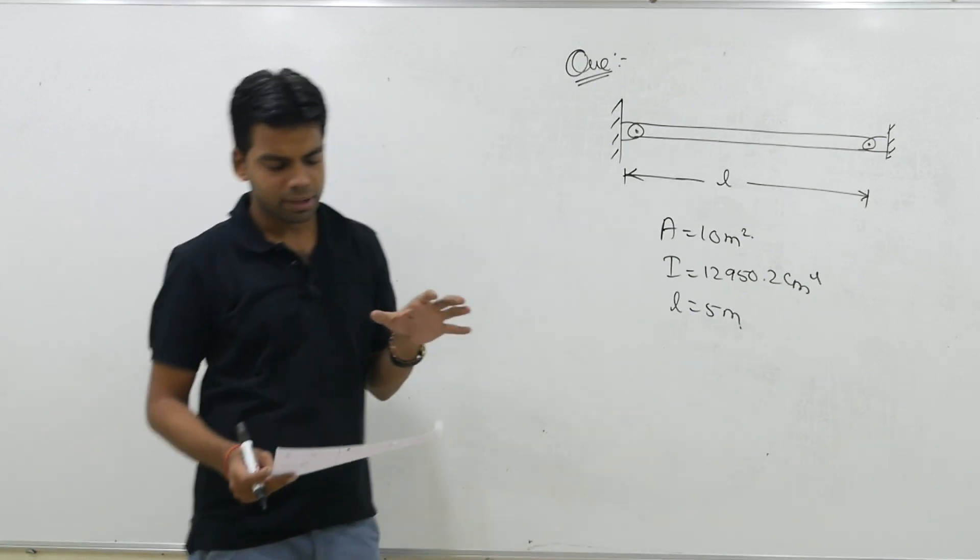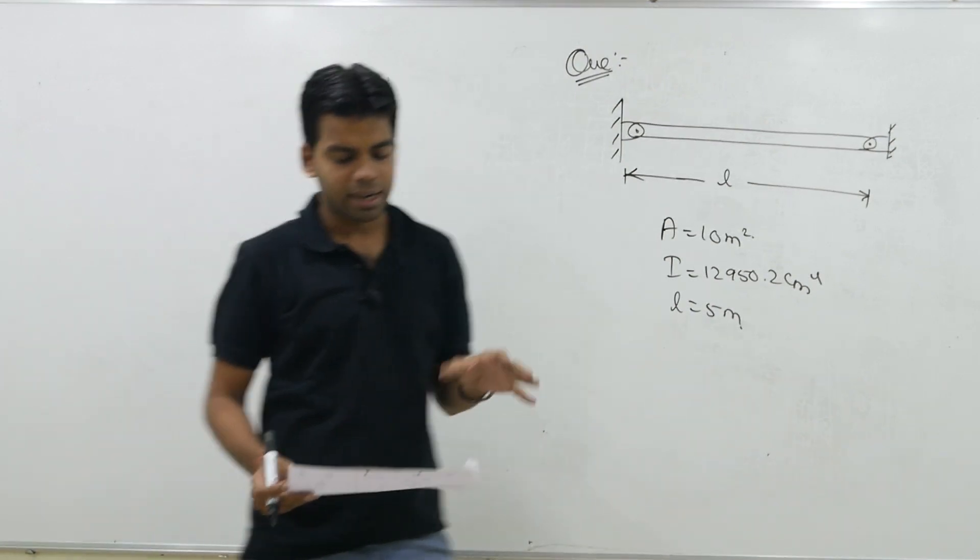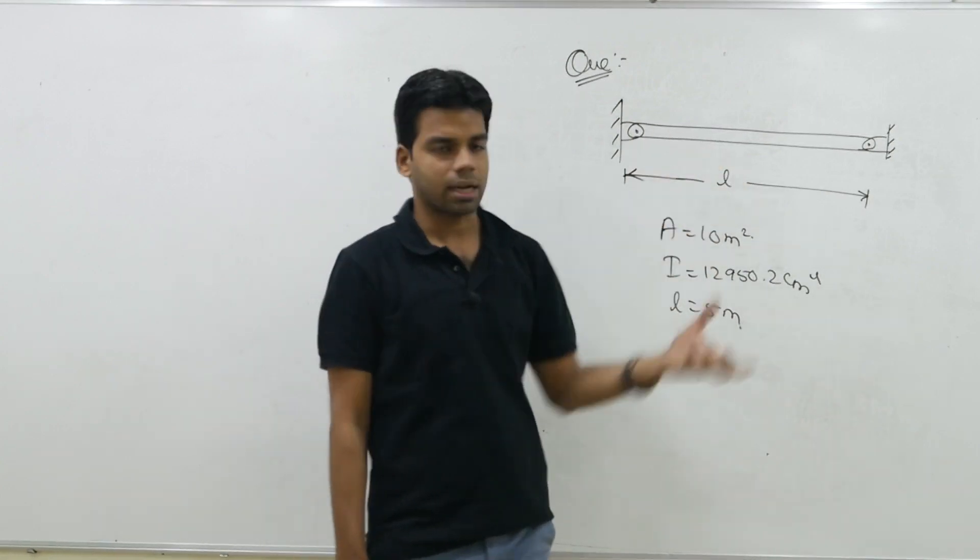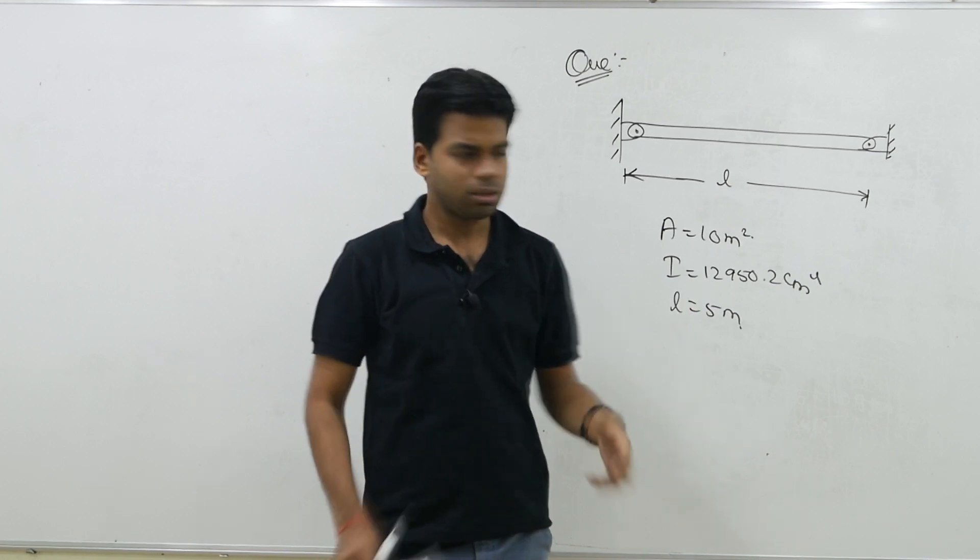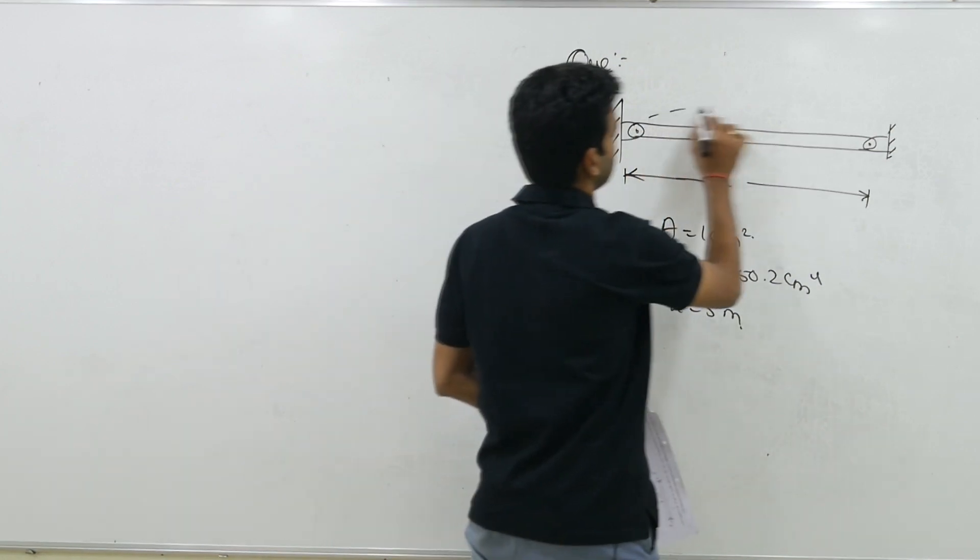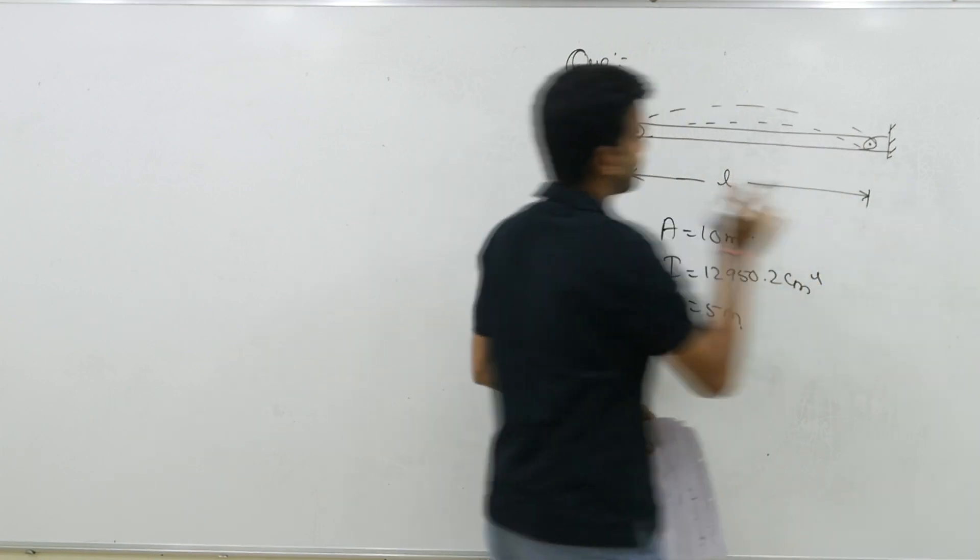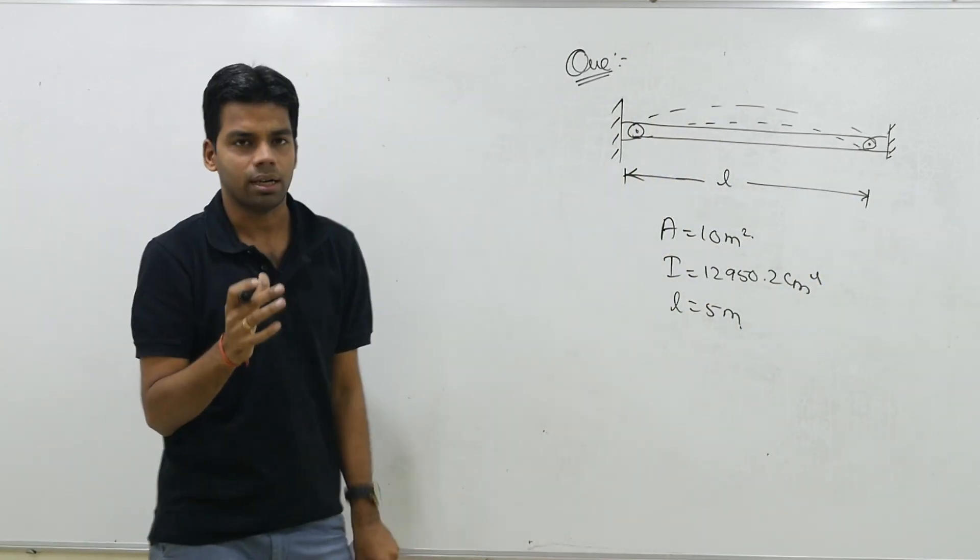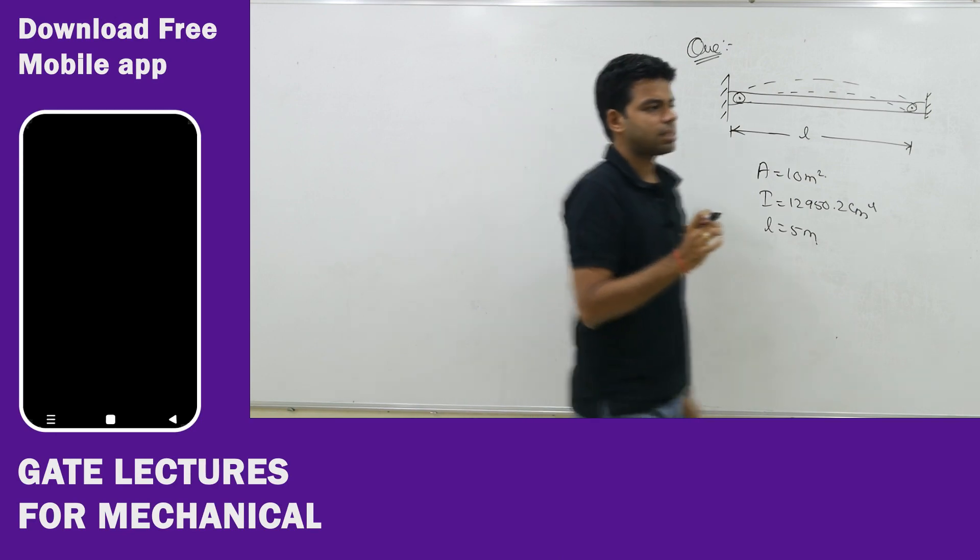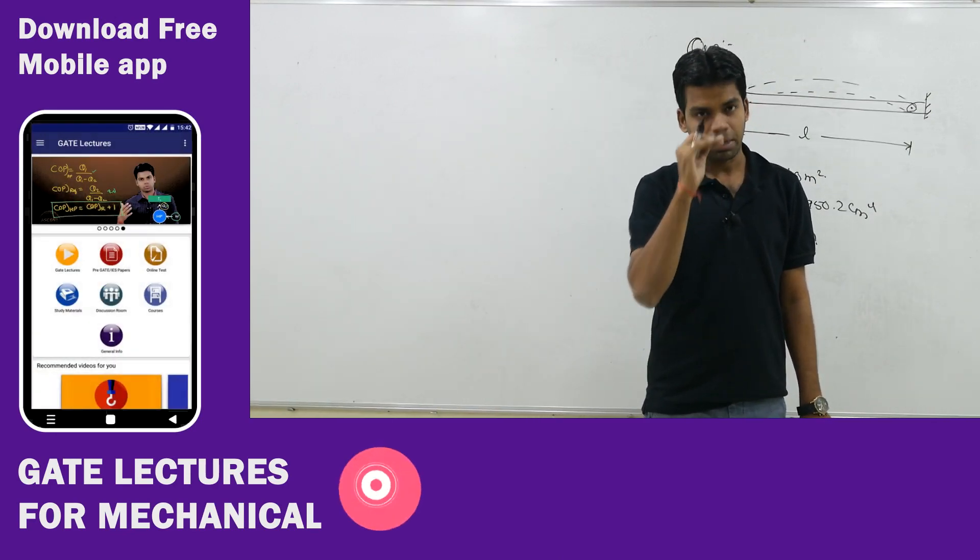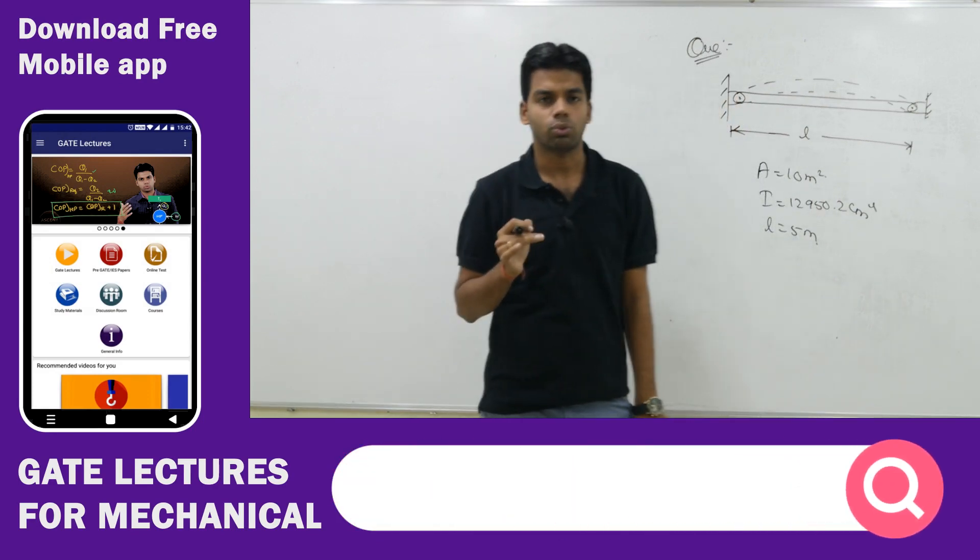You have to determine the rise in temperature to produce buckling of the bar. Now how much temperature will rise so that this bar will buckle. Buckling means this. Now how much the temperature should rise so that the bar will buckle. Now first of all, let us understand how would this bar buckle. Temperature rise hone se, ye bar buckling, bar mein buckling kis tarah se hogi.